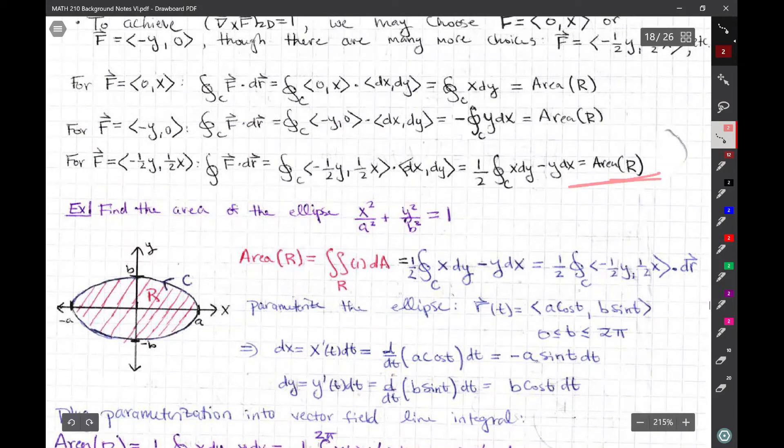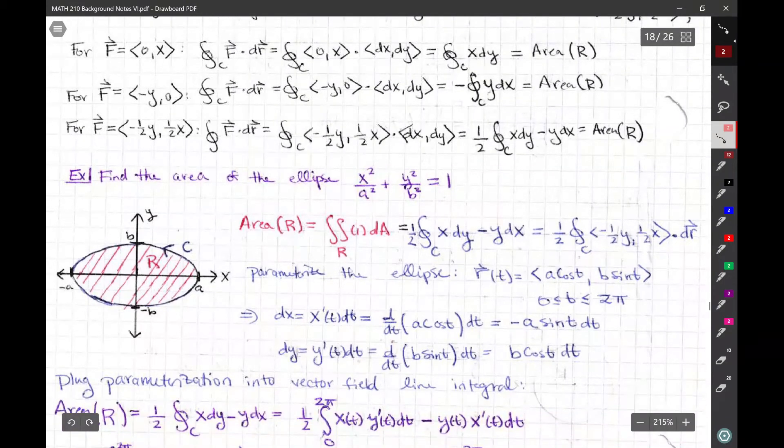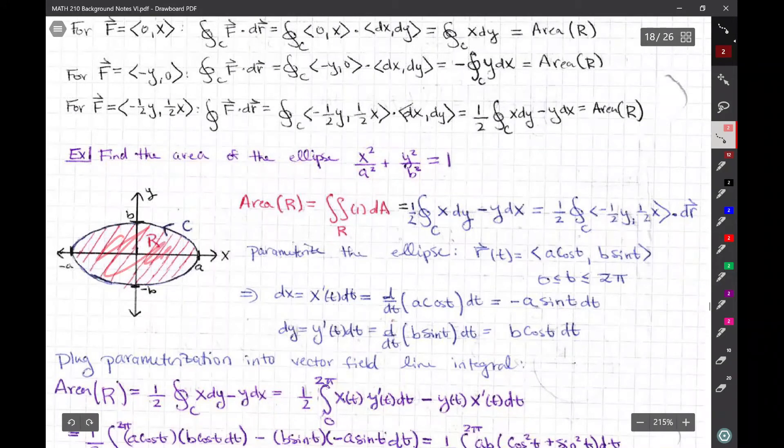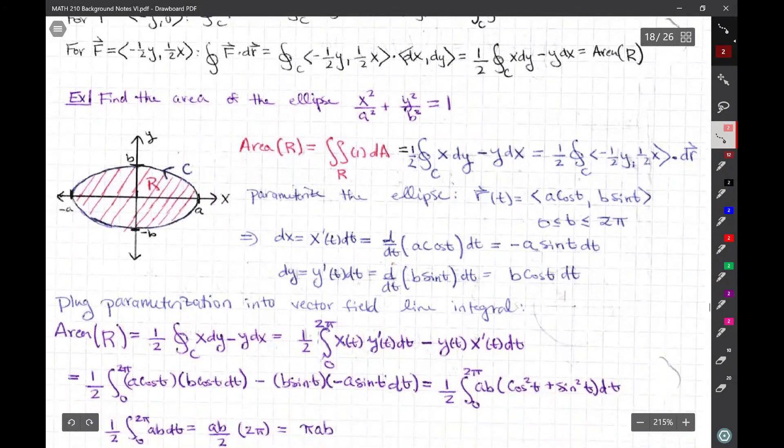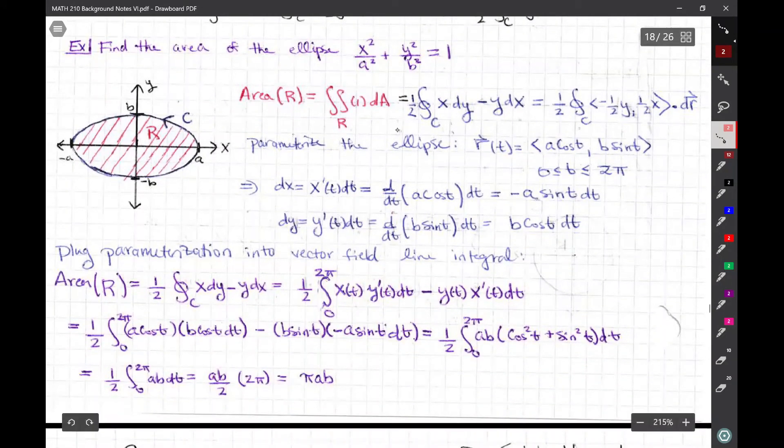Well, I chose this vector field f. Why did I choose that vector field? Well, only because I know its 2D curl is 1. So, I'm going to take the line integral of this vector field around c and I know at the end that my area will be equal to the area of my region, which is an ellipse over here.